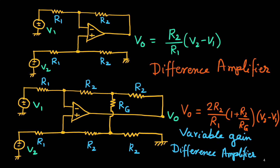In this circuit, RG is used and we can vary it because there is only one resistance RG connected here. Using that, we can vary the gain factor. We will discuss this circuit in detail.